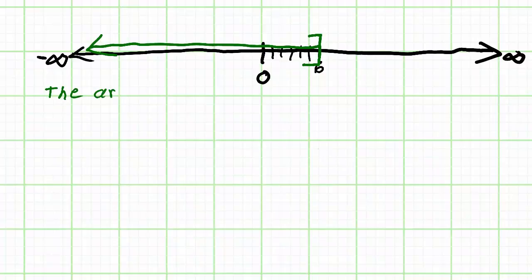And so, first, look at the arrow, the green arrow. The green arrow represents all of the numbers to the left of 6. We would also say all of the numbers less than 6. Those are going to be in our interval.